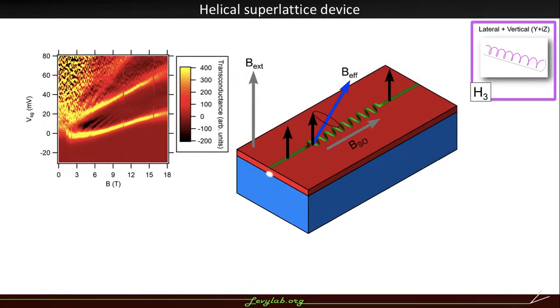What we think might be going on in these devices is that this helical superlattice engineers an axial spin orbit coupling. So that the combination of that with the applied external magnetic field creates an effective magnetic field in the superlattice. And when the electrons enter the superlattice, their spin begins to precess around this new effective field.